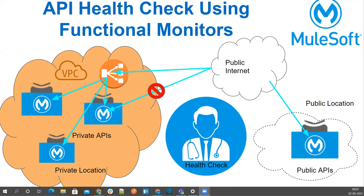Public APIs are those which are accessible from the public internet — anyone can access them. These can be Mule APIs or non-Mule APIs deployed in a public location such as a shared VPC. Private APIs are deployed inside your own private network, a VPC, and are accessible either from a dedicated load balancer or other APIs deployed under the same VPC. We call this a private location.